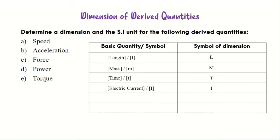Let's have a quick recap on our six basic quantities and the symbol of dimension for each of them. This is very important, as dimension is a technique or method to describe any physical quantity in terms of its basic quantity. To denote a dimension for any physical quantity, we need to write it in a bracket.